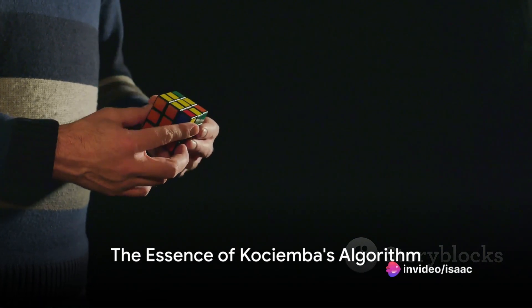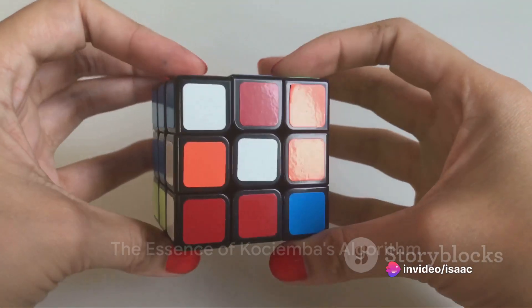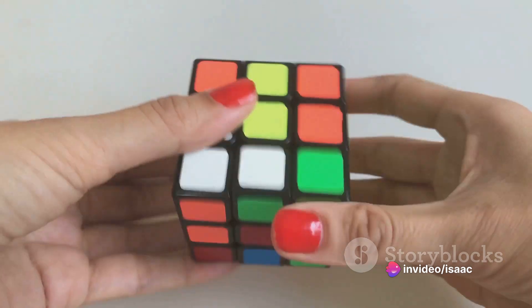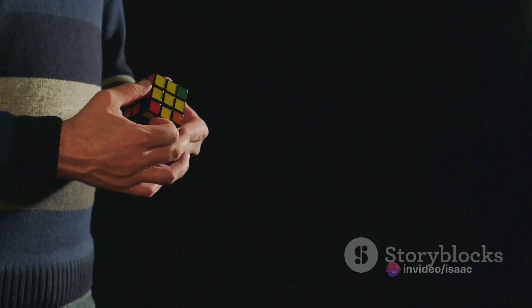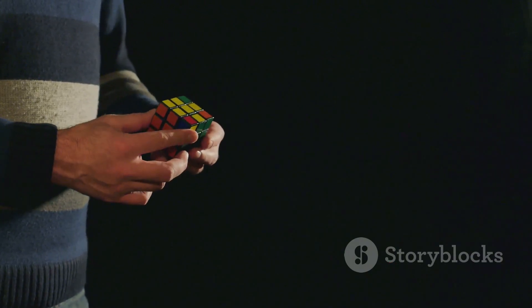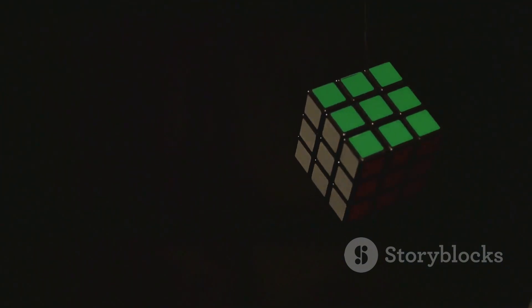So, Kociemba's algorithm is a two-step process. First, it reduces the complexity of the cube, making it easier to solve. Second, it precisely navigates from this simplified state to the solution. A clever combination of reduction and precision, that's the essence of Kociemba's algorithm.